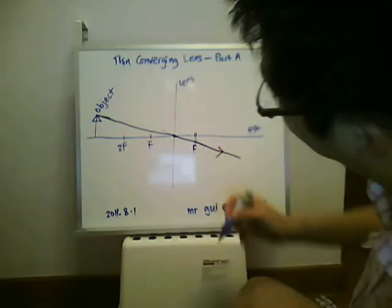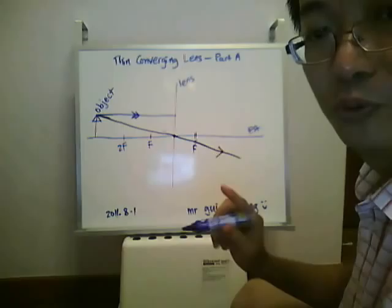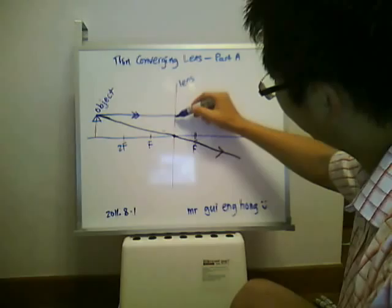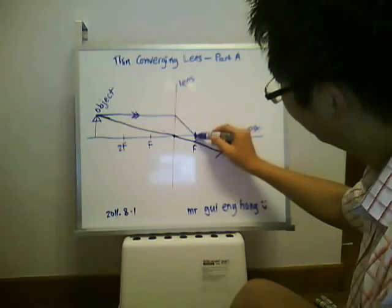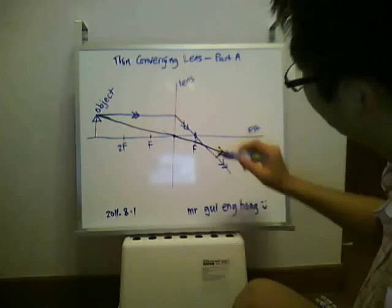The second light ray that you draw will be a ray that is parallel to the principal axis. I use blue color to show these are 2 different rays. After it goes parallel to the principal axis, it will cut through the focal point — another name for it is principal focus — and you go straight down.